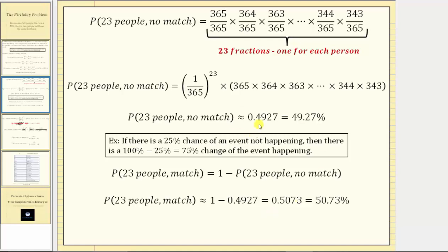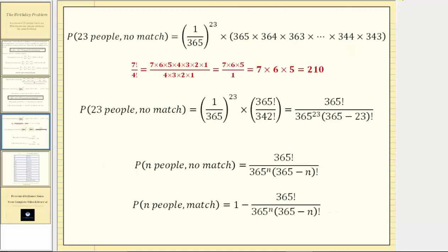Let's expand this and come up with a formula for the probability of n people with at least two people having a matching birthday. Going back to the probability of 23 people not having a matching birthday, let's rewrite this product using factorials. For example, 7!/4! expands and simplifies to 7 × 6 × 5. Applying this idea, we can write the product of the numerators as 365! divided by 342!.